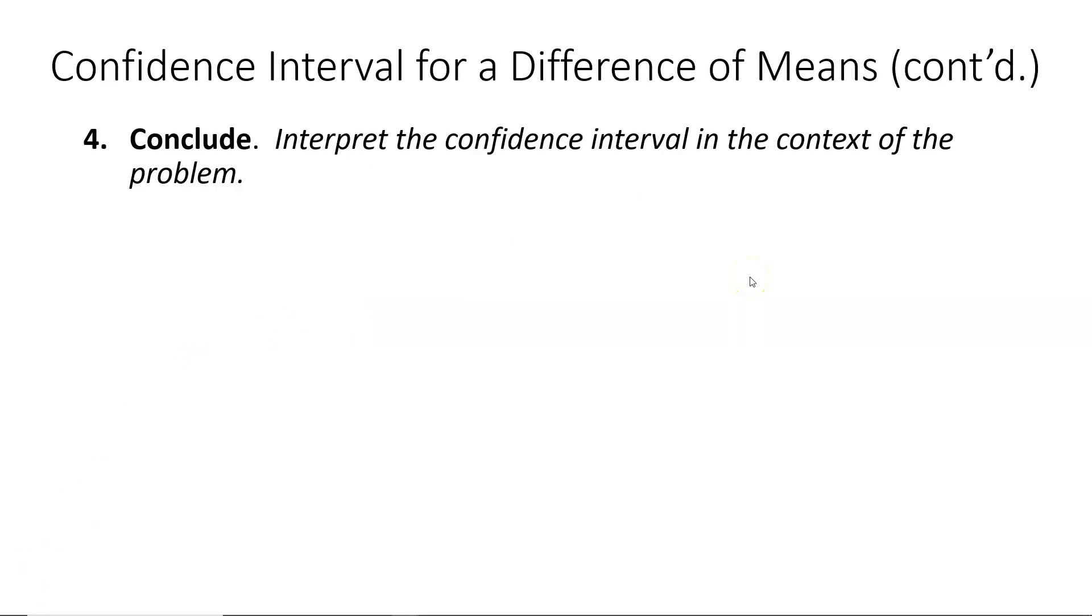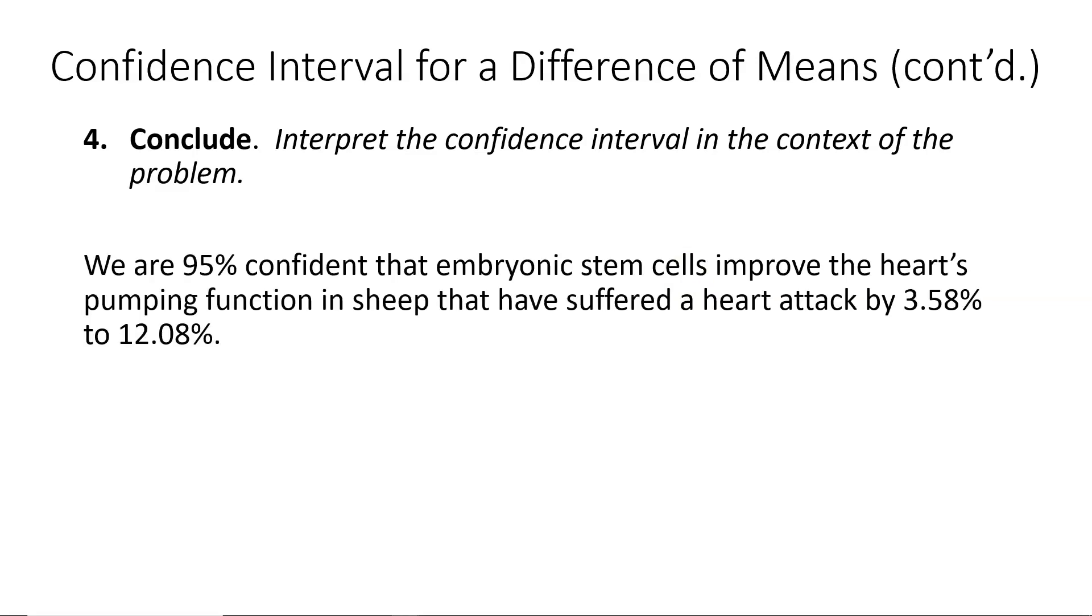So we close out our four step process with the fourth and final step, which is to conclude. We're going to interpret the confidence interval in the context of the problem. So we state we are 95% confident that embryonic stem cells improve the heart's pumping function in sheep that have suffered a heart attack by 3.58% to 12.08%. And that concludes this presentation. Thank you very much.